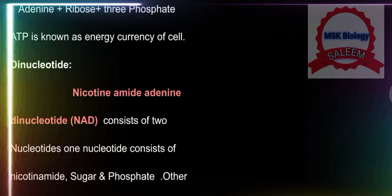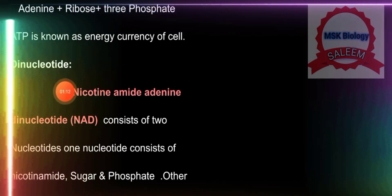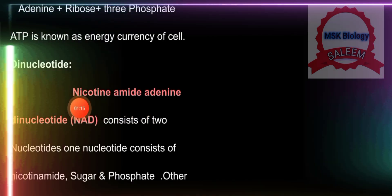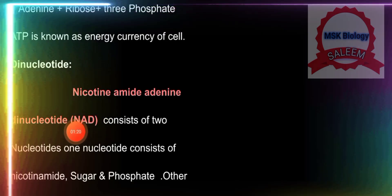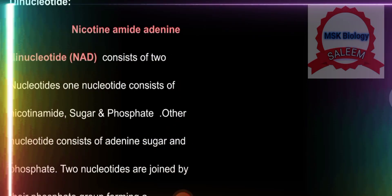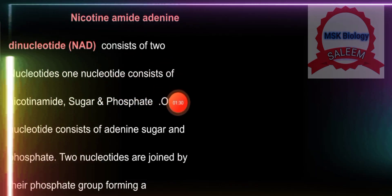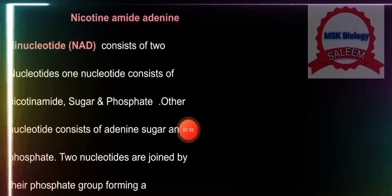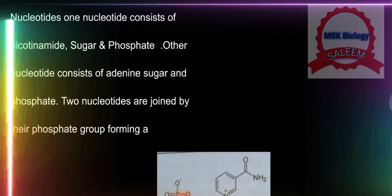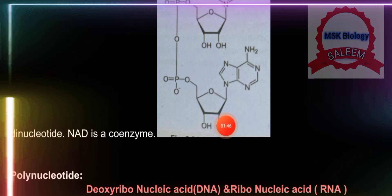Us ke baad, dinucleotide — di means two, so a dinucleotide is made up of two nucleotides. Its example is nicotinamide adenine dinucleotide, short form NAD. NAD consists of two nucleotides: one nucleotide consists of nicotinamide, sugar, and phosphate; and the other nucleotide consists of adenine, sugar, and phosphate. The two nucleotides are joined by their phosphate groups, forming a dinucleotide. NAD is a coenzyme.